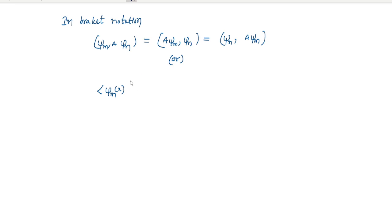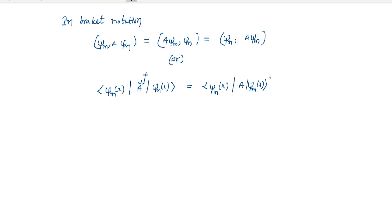So, psi m of x, operator, psi n of x — this is the bra-ket — equals psi n of x, A, psi m of x, into complex. So if it follows this rule, then we can say that the operator is Hermitian adjoint.